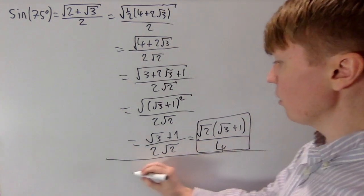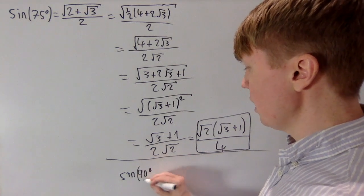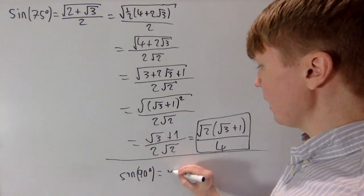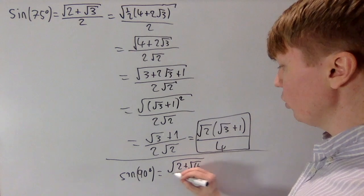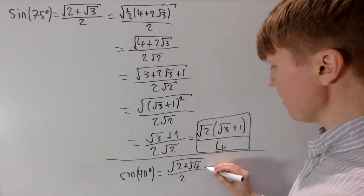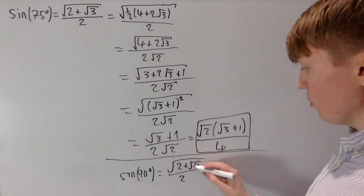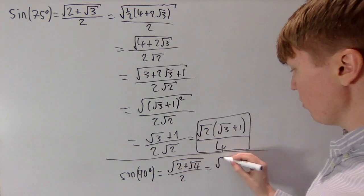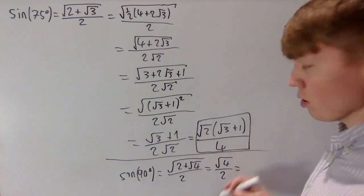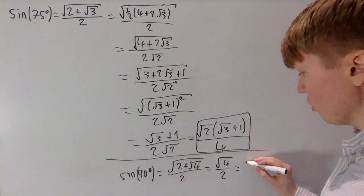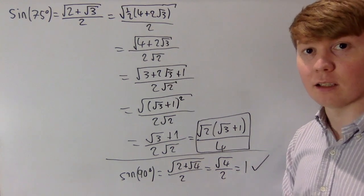Finally for sin 90 degrees, following our pattern it's given by the square root of 2 plus root 4, all over 2. Root 4 is just 2, so this is the square root of 2 plus 2, which is the square root of 4 over 2, which is 2 over 2, and this is indeed equal to 1, as we'd expect for sin 90 degrees.